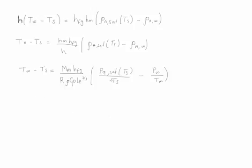Notice in this equation the value of P infinity is equal to zero since we measure it in gauge. Therefore, T infinity minus TS is essentially one over TS times the molecular mass HFG, R, Rho, C P, L E to the two-thirds times the pressure saturated at this given temperature.